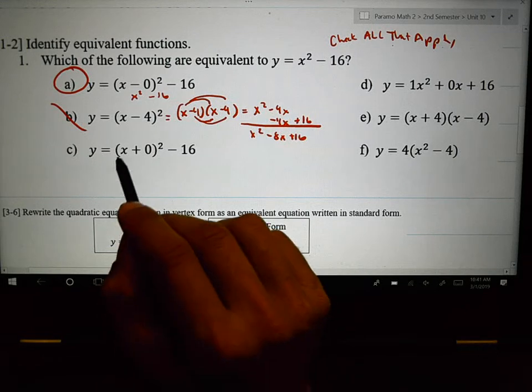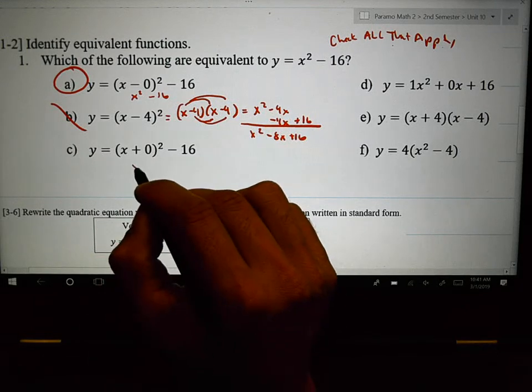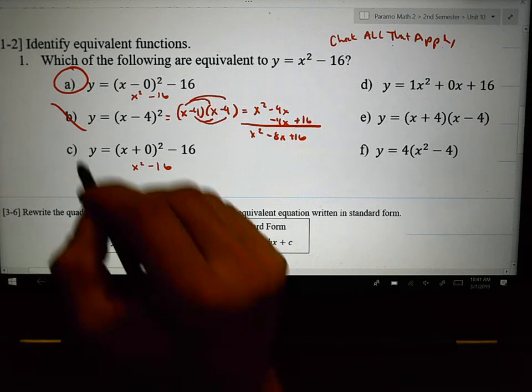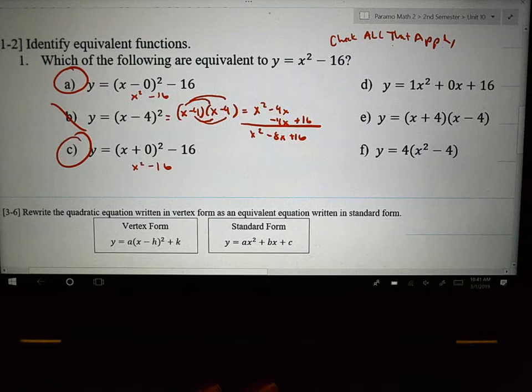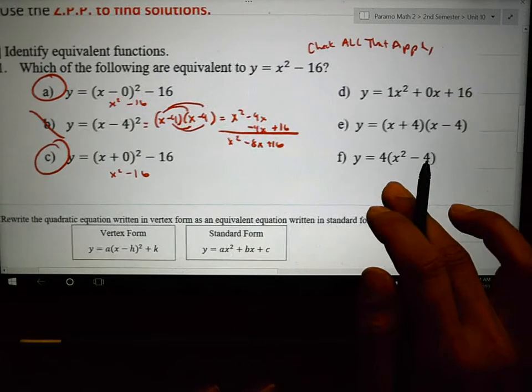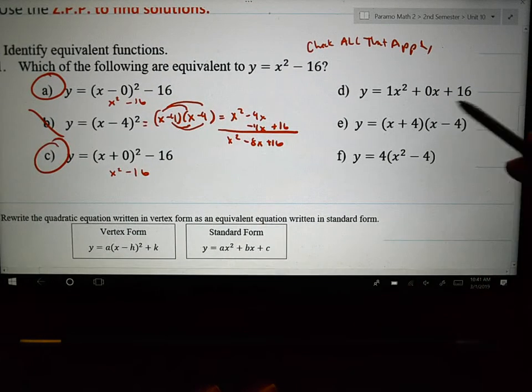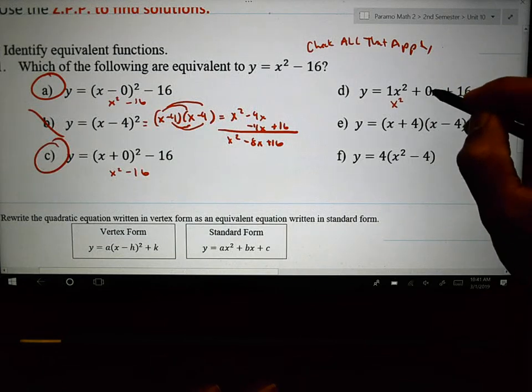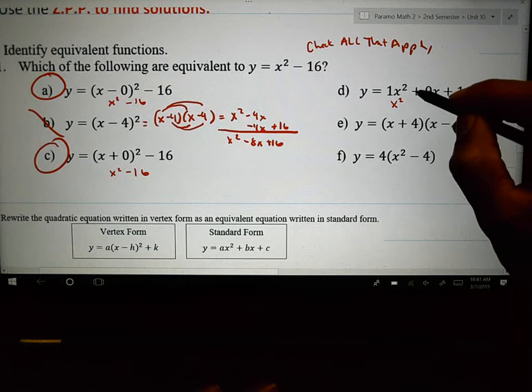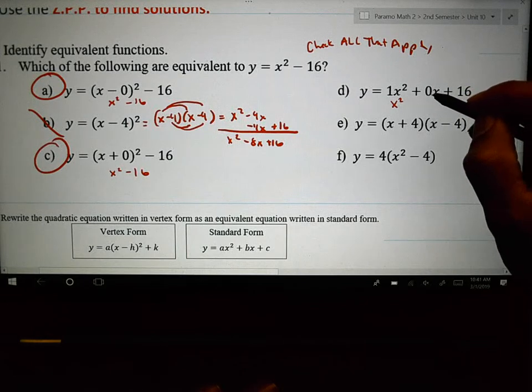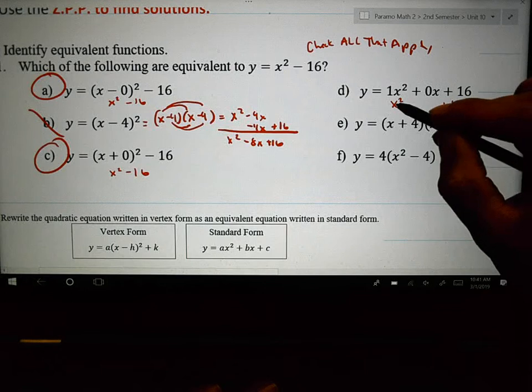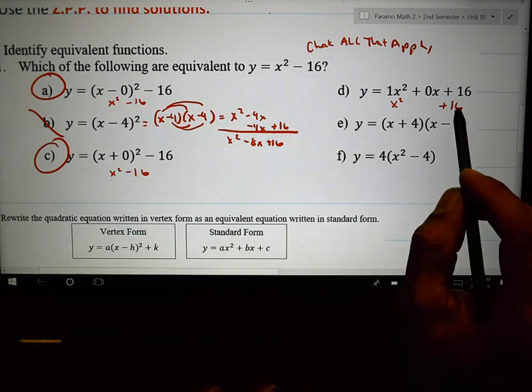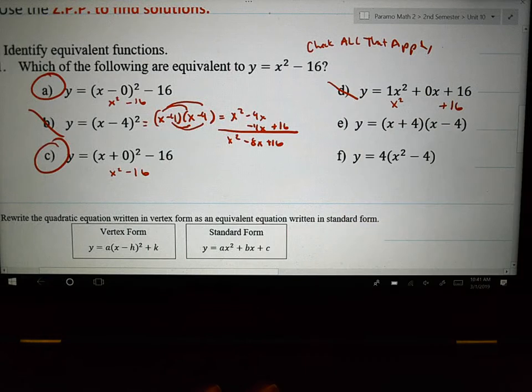Then we try the next one. x plus nothing. Are they equivalent? Yep. Now this one looks kind of close. Let me see. 1 times x squared is x squared. 0 times x is 0. So if I'm adding 0 or adding nothing, let's not write that down. Let's just write x squared plus 16. That looks pretty close. Wait. That 16 is negative. This is positive. They're not equivalent.